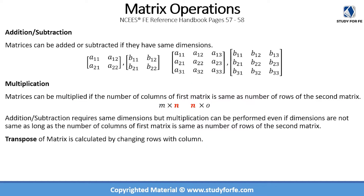Another important matrix operation is transpose. The transpose of a matrix is calculated by changing its rows with columns. Once we go through practice problems, addition, subtraction, multiplication, and transpose will all make more sense. You can also do most of these operations using a calculator, but I emphasize knowing the basics and being able to do it by hand, so you can cross-check your work and the calculator can validate your answers.